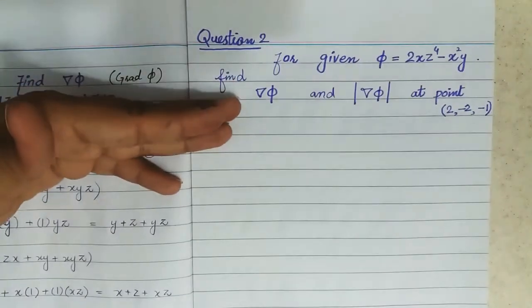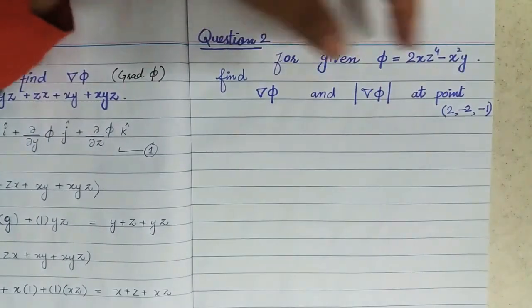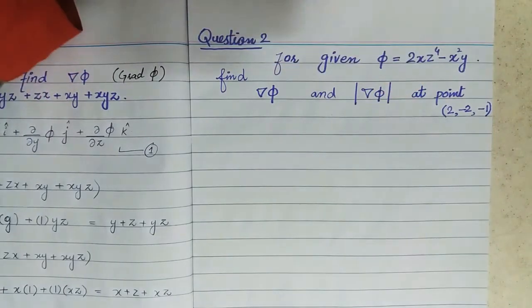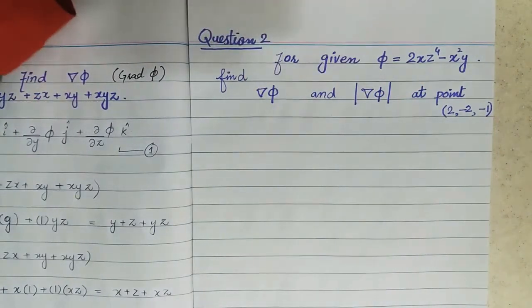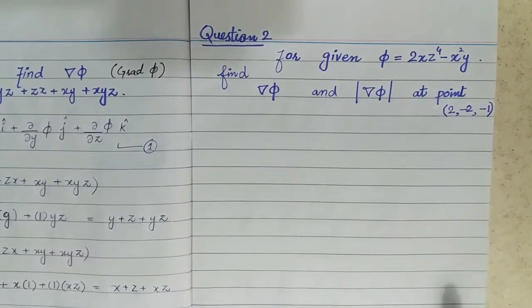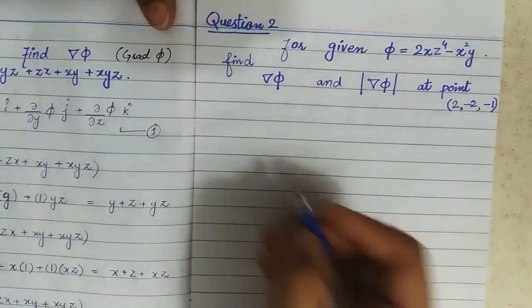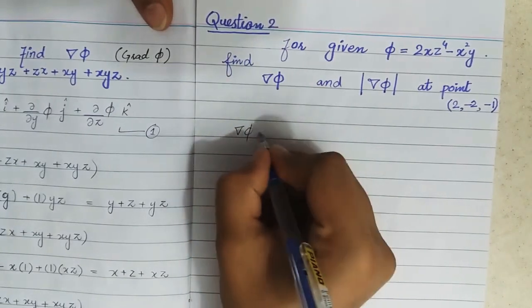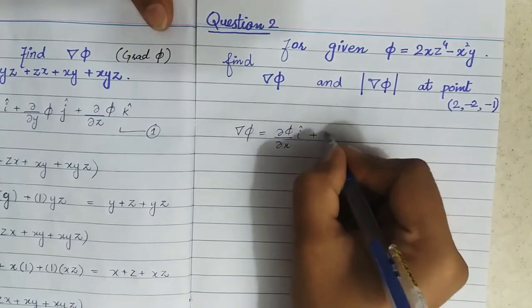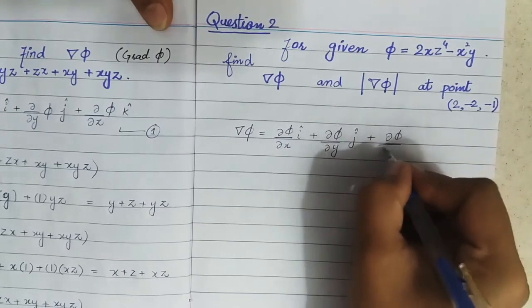First, we have to find the gradient, and then put the given point into the gradient answer at x equal to 2, y equal to −2, z equal to −1. Then find the magnitude of that. The gradient is: del phi equals partial phi over partial x i plus partial phi over partial y j plus partial phi over partial z k.